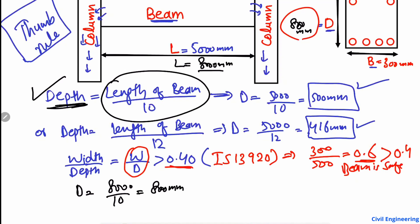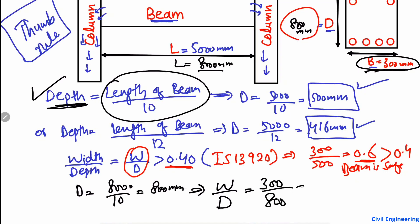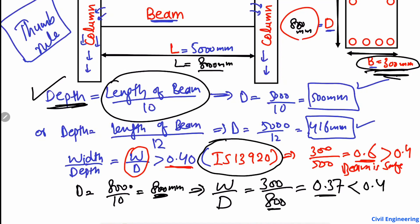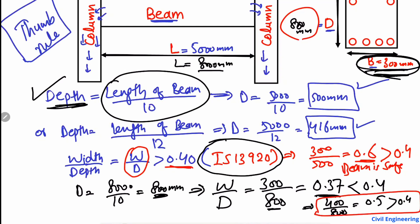Now let's check the width-to-depth ratio condition. Suppose we again take width W as 300 millimeters. Then W divided by D is 300 divided by 800, which gives 0.37. Since 0.37 is less than 0.4, this does not satisfy the Indian Standard. So we must increase the width — for example, to 400 millimeters. Then 400 divided by 800 gives 0.5, which is greater than 0.4, so this is now a safe design.